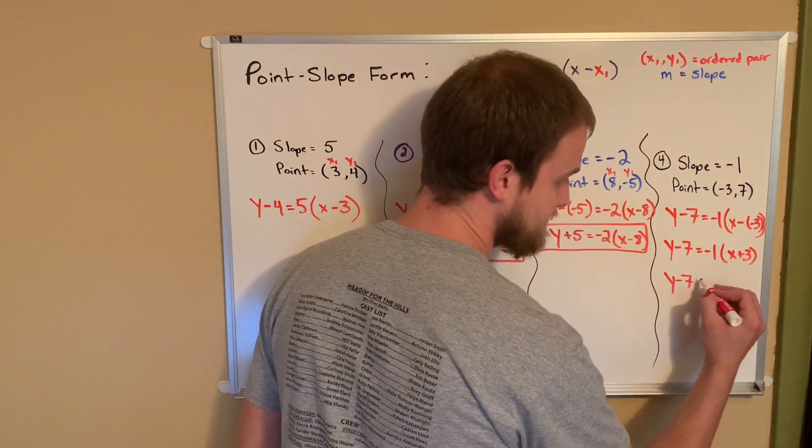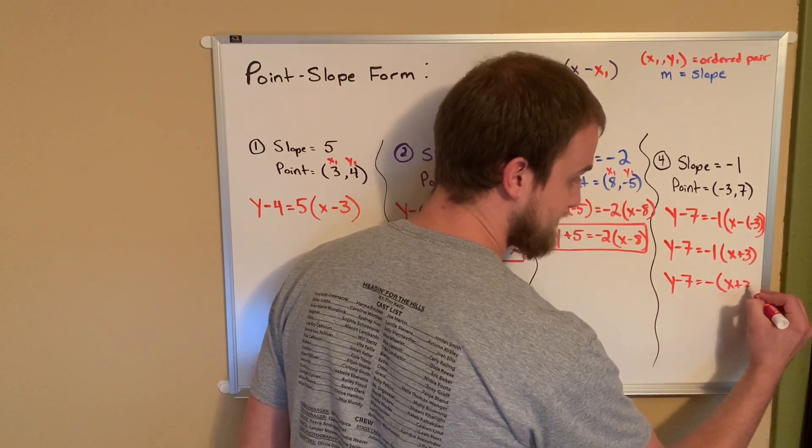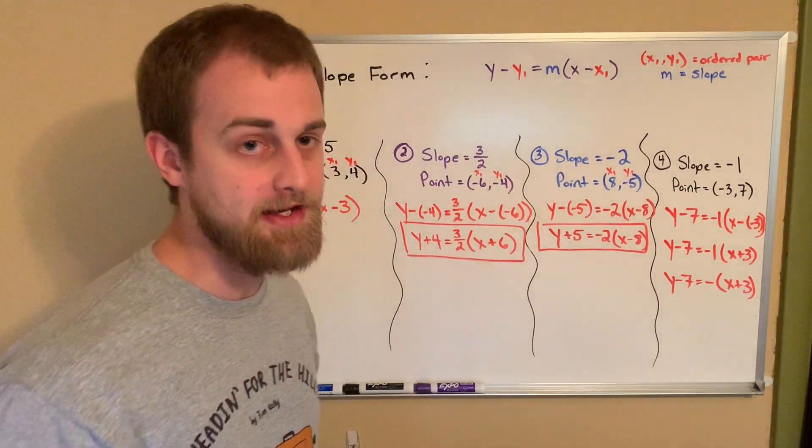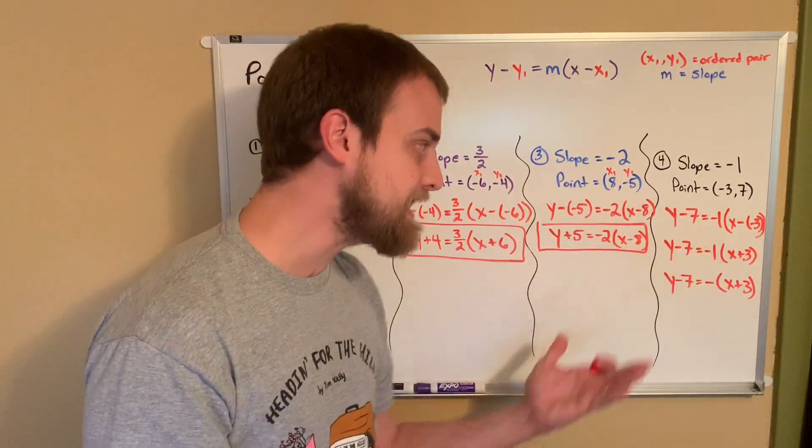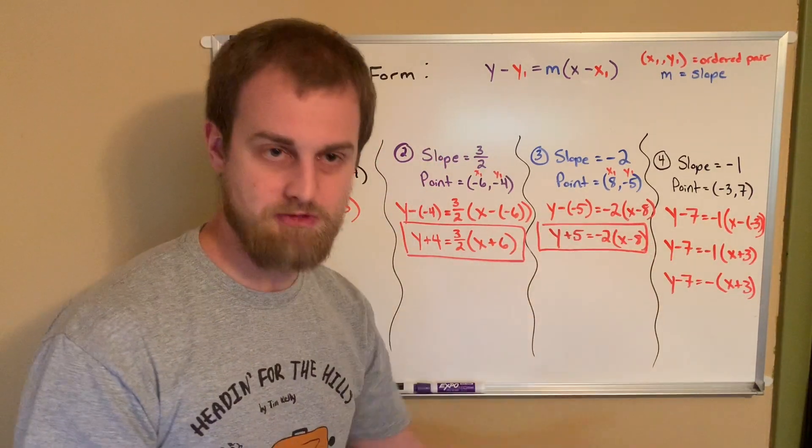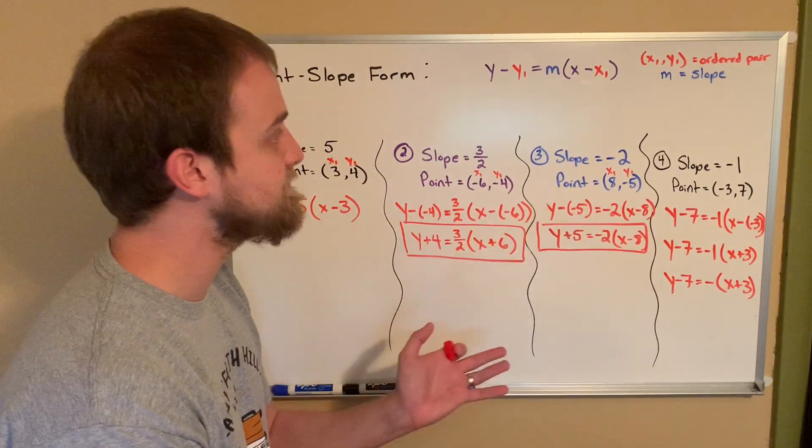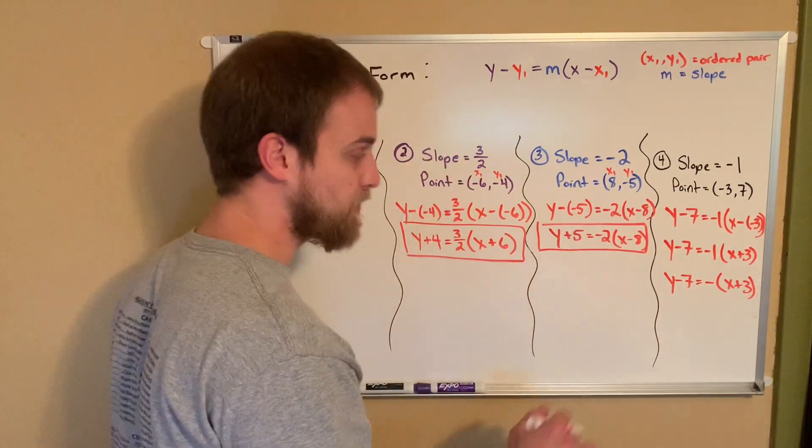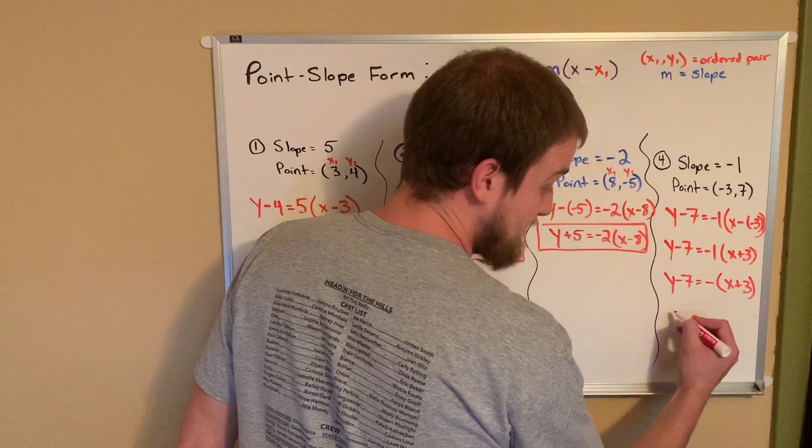Now, even further than that, some people might say, can I distribute that negative through there? Yeah, you can. You're kind of breaking point slope form. However, it is something that can be done. We'll do more with this later. So probably a more unpopular answer, but it may be an answer nonetheless.